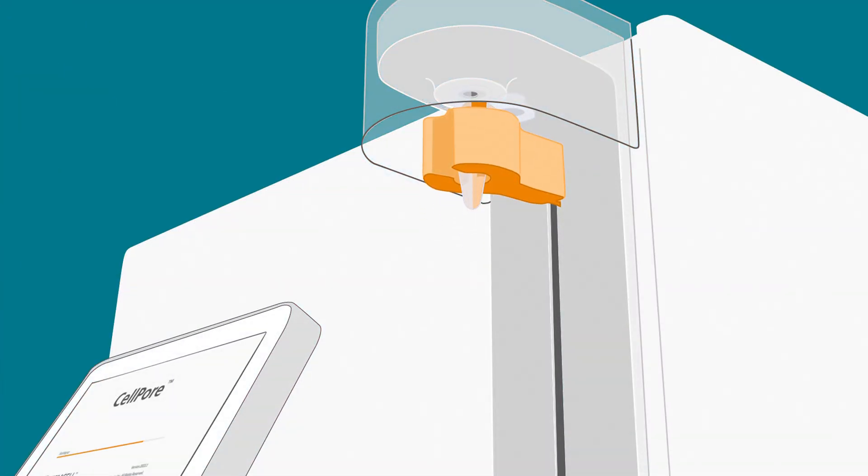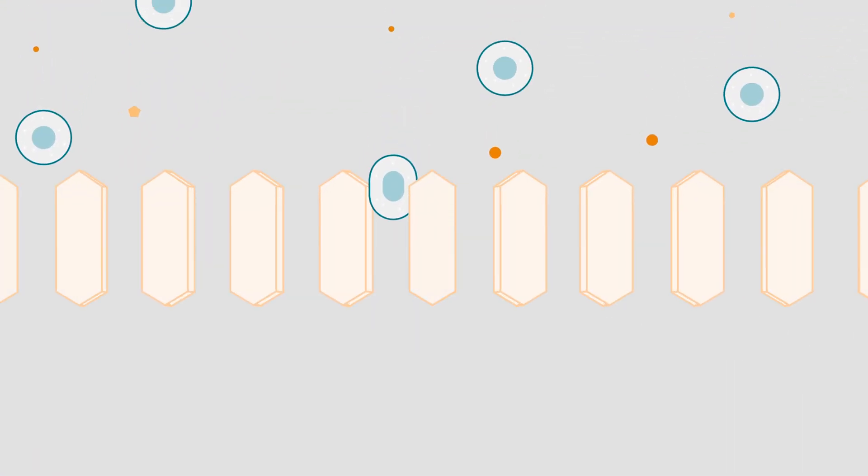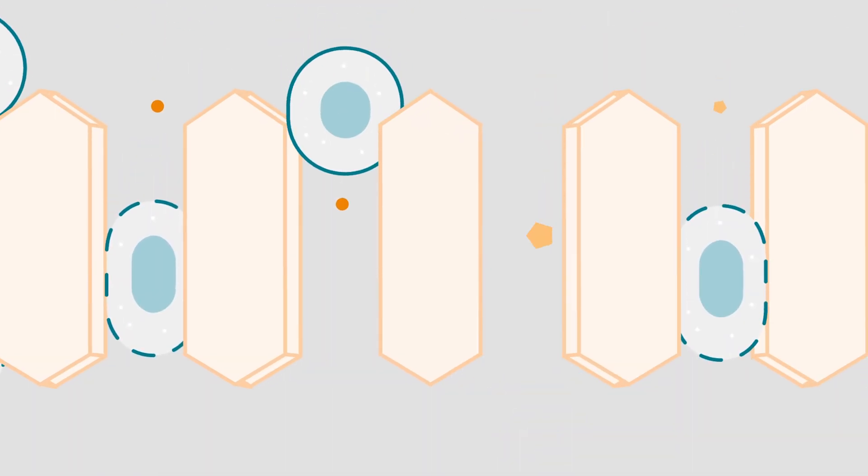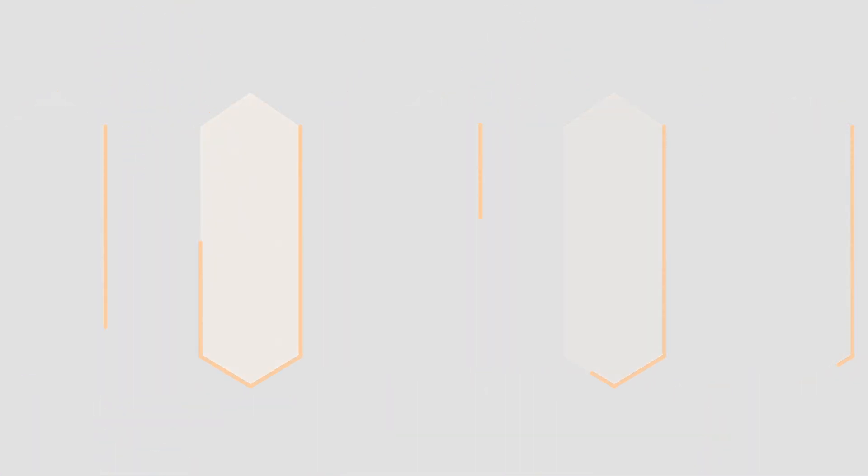The instrument applies pressure to push the cells through narrow microfluidic channels embedded within the cartridge. As cells rapidly navigate through parallel constrictions, this process creates temporary pores in the plasma membrane that allow for extracellular materials to enter the cytosol.